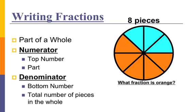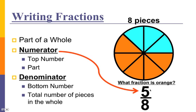How about what fraction is orange? I've got eight total pieces. I've got one, two, three, four, five orange pieces, so that fraction is going to be five eighths. I've got five orange pieces — that's my numerator because that's what I'm talking about, the orange. And my denominator is eight because there are eight total pieces in my whole.